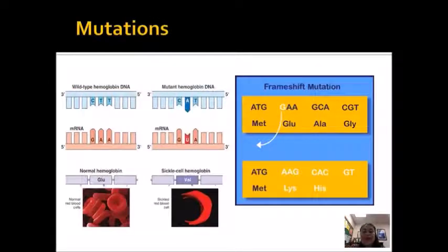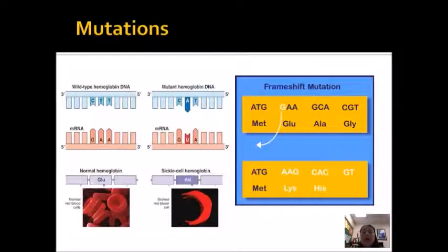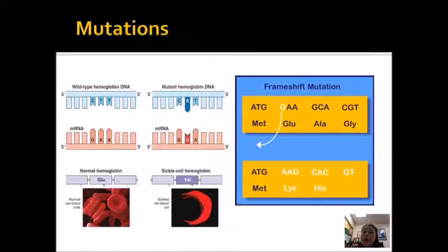Every so often there is a mistake in the DNA. Mutations are random and they're rare. We have a really good editing system involving our DNA, and when mistakes occur, usually we can fix them. But every once in a while mistakes do happen, and it can result in either a beneficial, neutral, or harmful mutation.